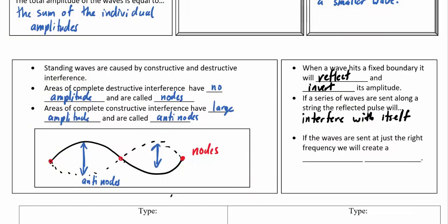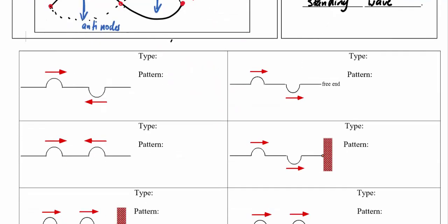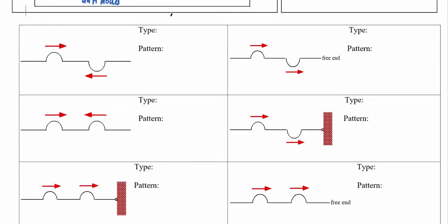If the waves are at just the right frequency, we will create a standing wave. Let's use these examples as a quick comparison. What's going to happen when these two waveforms run into each other? Well, this crest and this trough, since they're identical but inverted, they're going to have destructive interference. So the pattern would just look like a flat string.